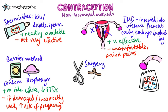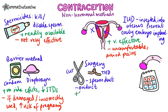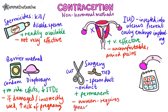Next up, we've got surgical methods. For males this involves the sperm duct, and for females, the oviduct — these can be either cut or tied. The big advantage is that it's permanent, for people who know they don't want to conceive. The disadvantage is that for women, this procedure requires a general anesthetic, which carries a risk with it.